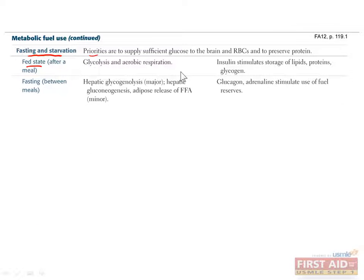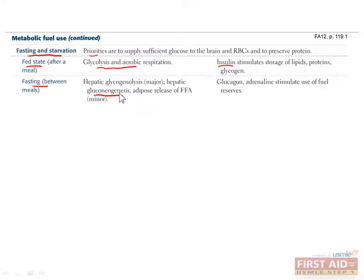In the fed state, insulin is used to stimulate the storage of lipids, proteins, and glucose. Assuming plenty of oxygen is available, both glycolysis and aerobic respiration can occur. However, in an unfed state, glucagon is produced, which causes you to use fuel reserves rather than free glucose to maintain bodily functions. This is supplemented by gluconeogenesis and fatty acid metabolism.